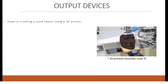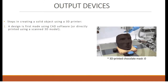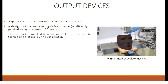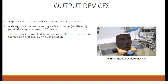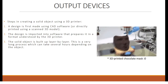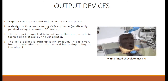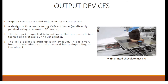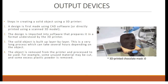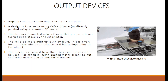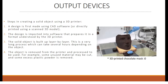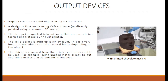Steps in creating a solid object using a 3D printer: First, a design is made using CAD software, or directly printed using a scanned 3D model. The design is imported into software that prepares it in a format understood by the 3D printer. The solid object is then built up layer by layer — a very long process which can take several hours depending on the object and its size. The object is removed from the printer and processed for use; for example, unused material may be cut and excess plastic powder removed. The diagram on the right shows a 3D printed chocolate mask.